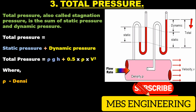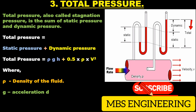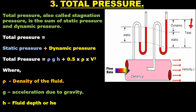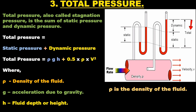Where rho is the density of the fluid, g is the acceleration due to gravity, h is the fluid depth or height, and V is the velocity of the fluid.